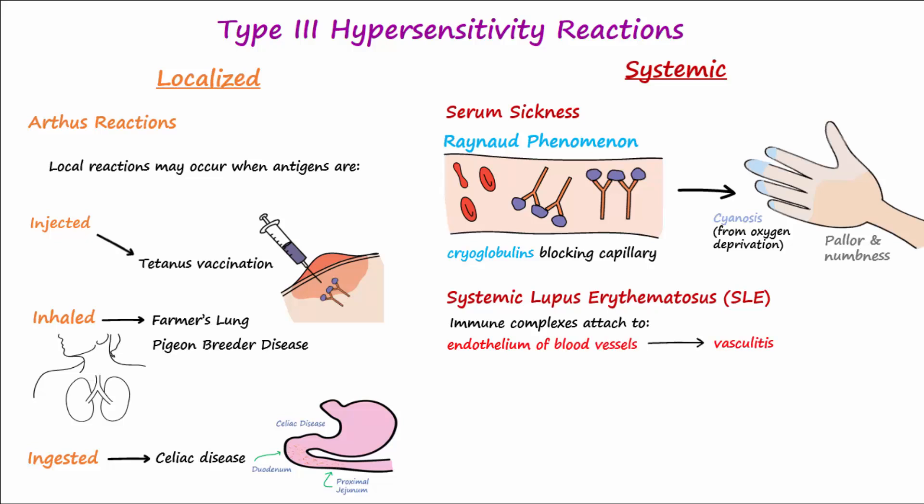Immune complexes can lodge especially in the glomerular capillaries of the kidneys, causing acute glomerulonephritis. In another autoimmune disease, rheumatoid arthritis, immune complexes known as rheumatoid factor (RF), composed of IgM, IgG, and complement, are deposited in joints and elicit an immune response that causes joint damage and destruction.